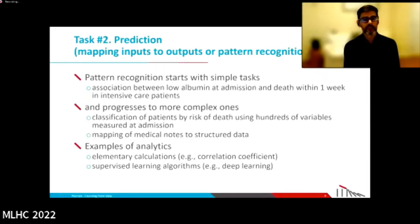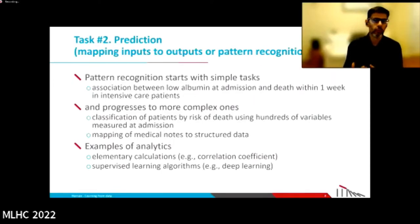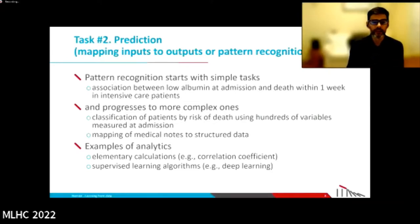For the second task — prediction, or mapping inputs to outputs, also known as pattern recognition — we can do simple things like compute the strength of the association between low albumin and death, or more complex things like classifying patients by their risk of death according to hundreds of clinical measurements, or use natural language processing to map medical notes to analyzable data. Analytics range from a correlation coefficient to deep learning — very different tools, but for the same task: mapping inputs to output.